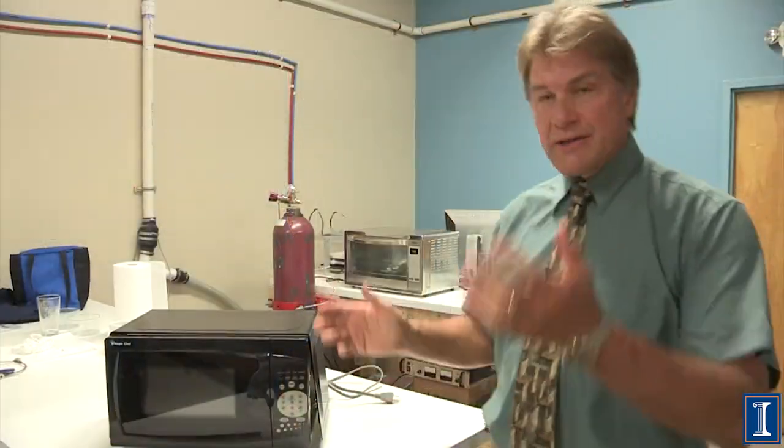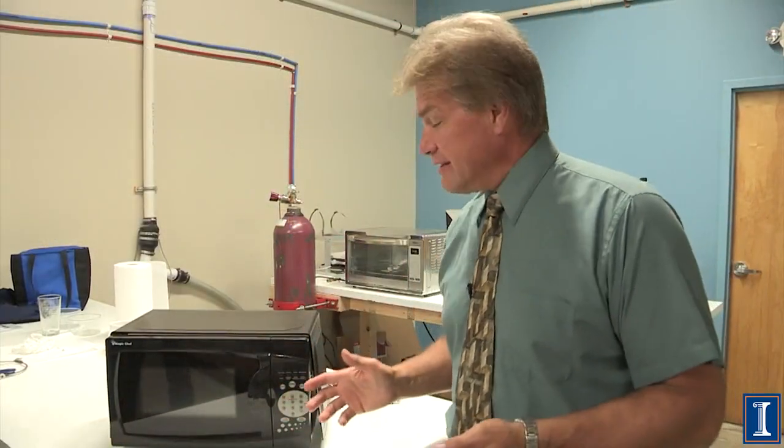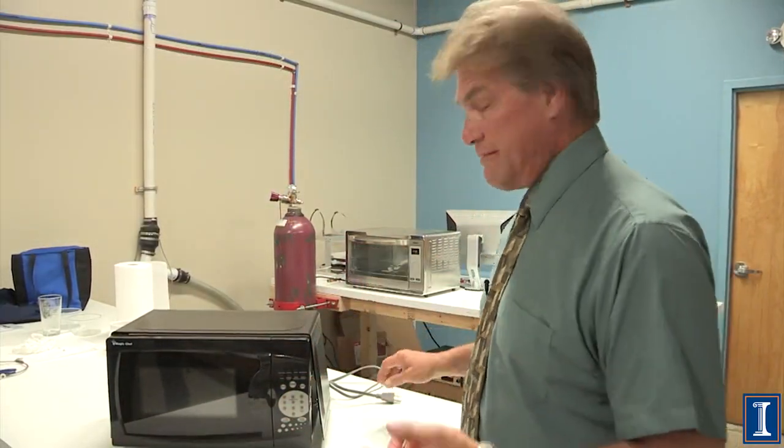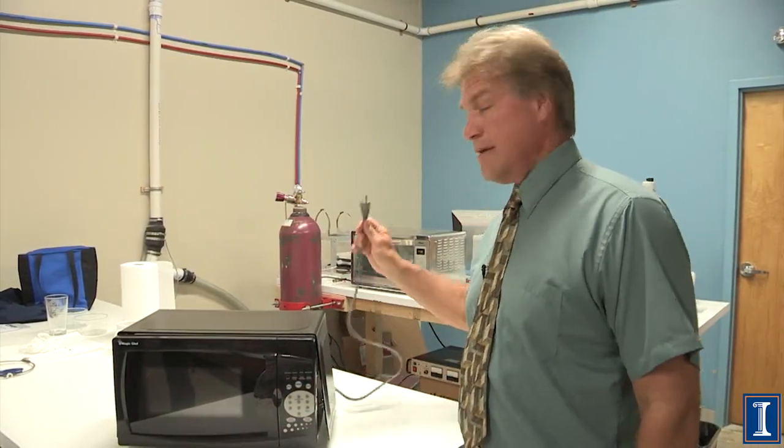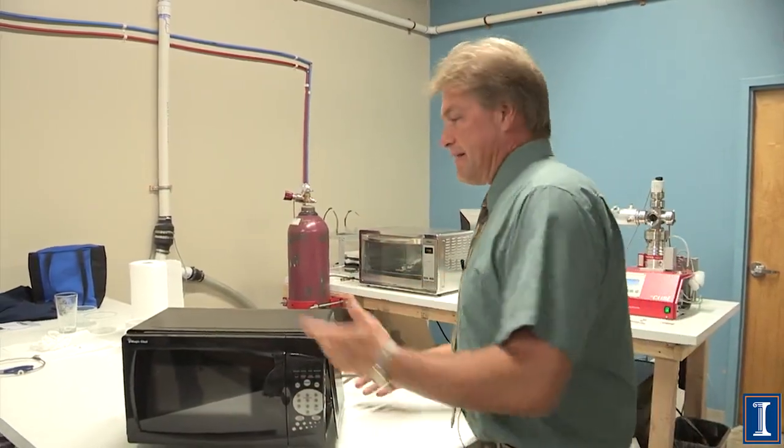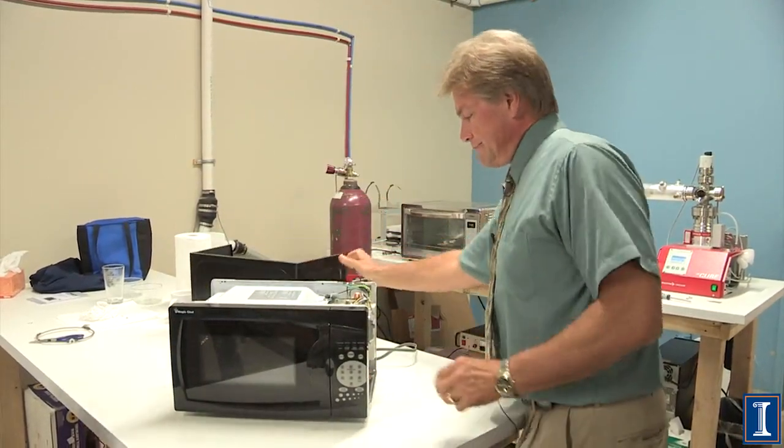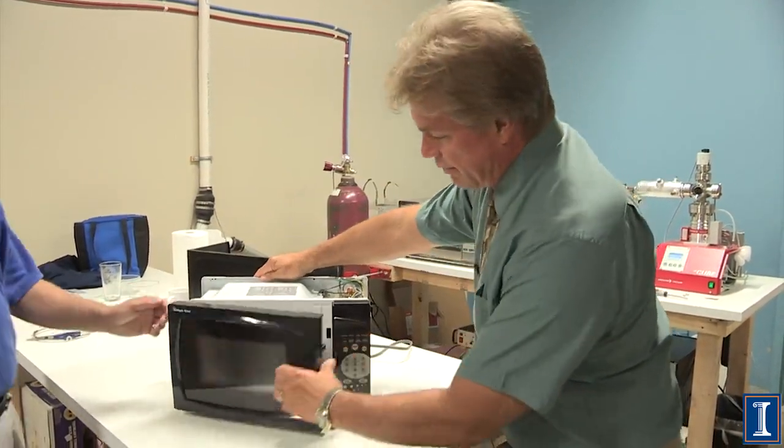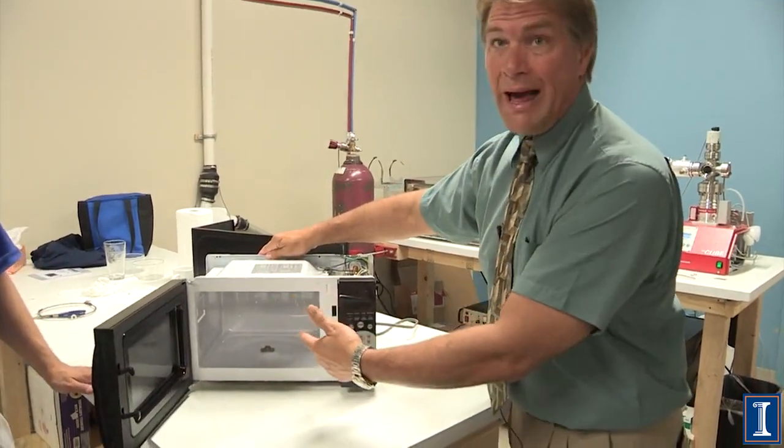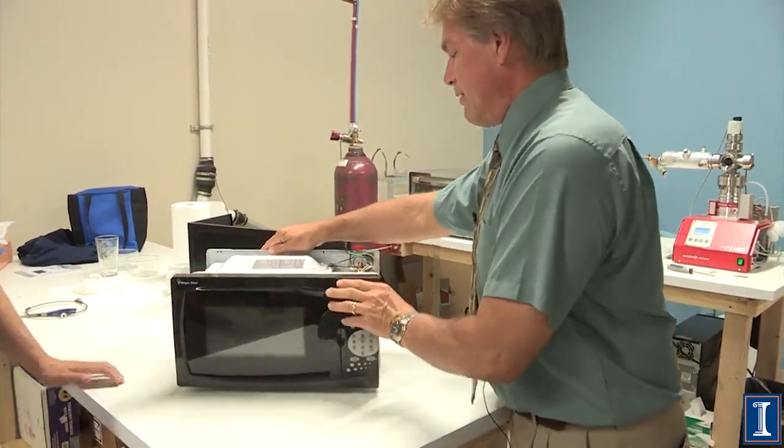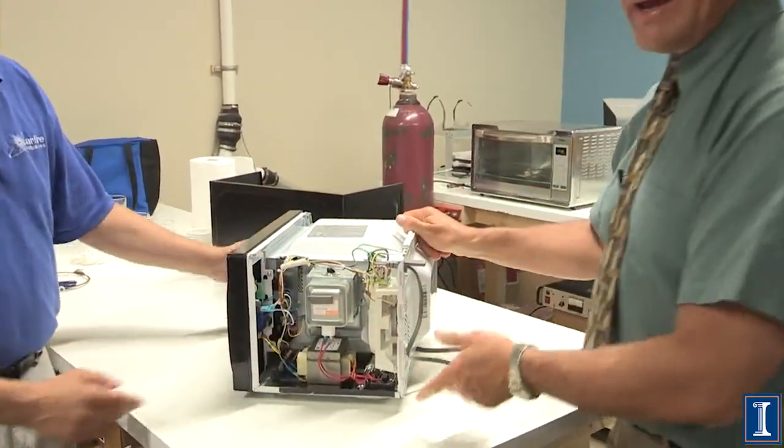Here we've got our microwave oven. Let's see what's inside. Very important thing - unplug it. We've already taken off the screws, so we take the lid off. This whole part is just an empty metal box. All of the guts are right here.